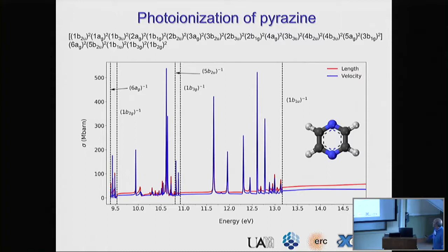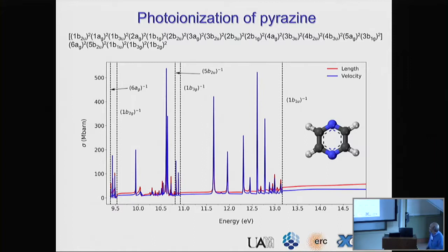We tried a large molecule — for my standards — which is pyrazine. Here's the photo-ionization spectrum we get for pyrazine. We see resonances again and get very good gauge invariance. Unfortunately, there is no experiment here to compare with, but we will look at other molecules.